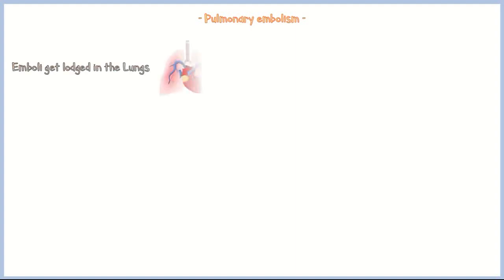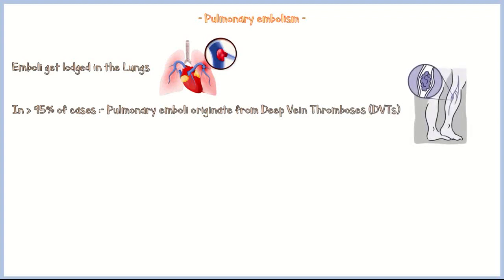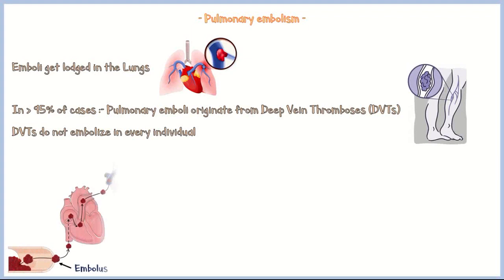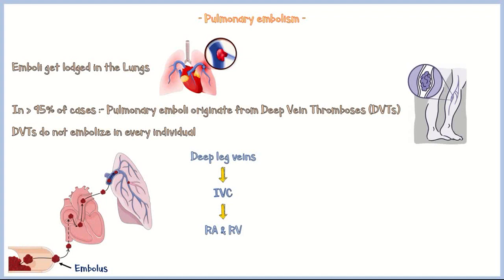In pulmonary embolism, emboli get lodged in the pulmonary circulation. In more than 95% of cases, pulmonary emboli originate from deep vein thromboses. However, it is important to note that deep vein thromboses do not embolize in every individual. Emboli detached from DVTs reach the inferior vena cava to enter the right atrium and right ventricle, and then enter the pulmonary circulation during systole.